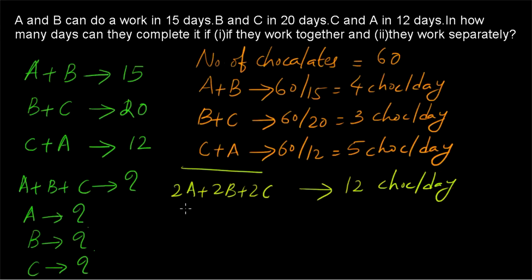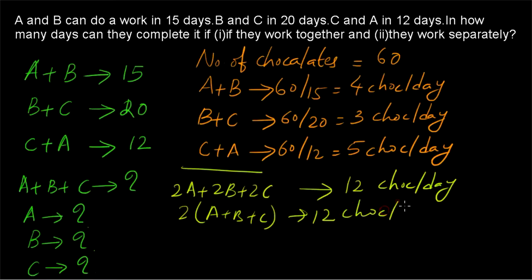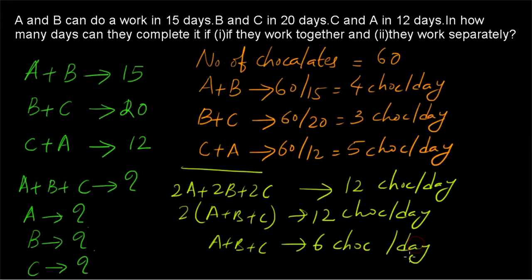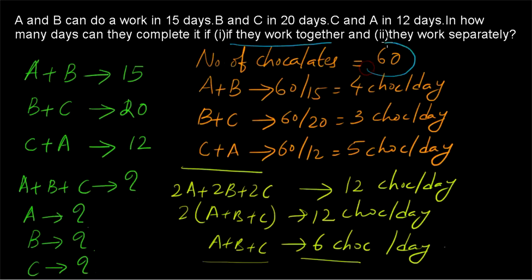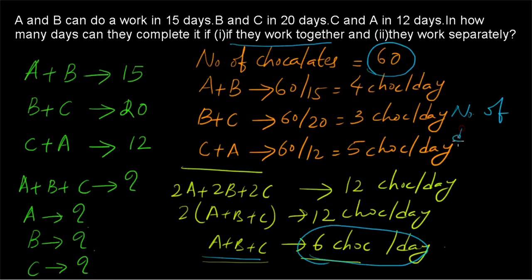From 2(A + B + C) = 12, we get A + B + C = 6 chocolates per day. So when A, B and C are working together, they consume 6 chocolates per day. The total chocolates is 60, so the number of days is 60 divided by 6, which equals 10 days.